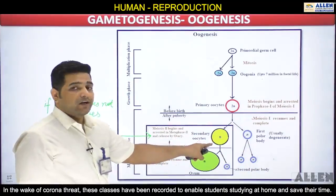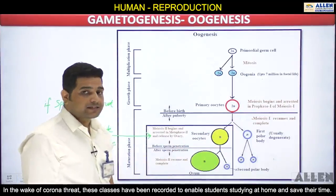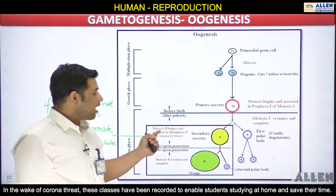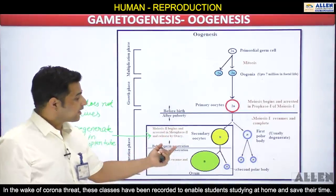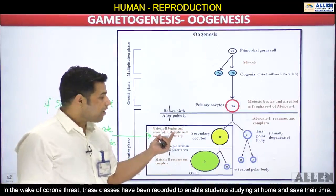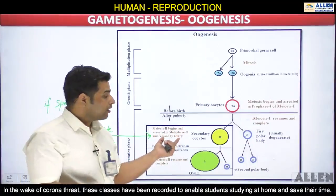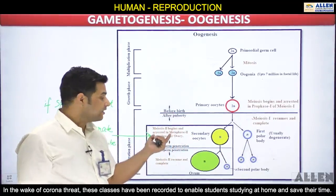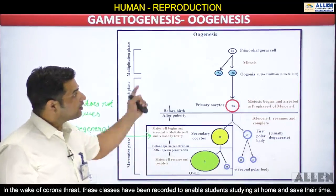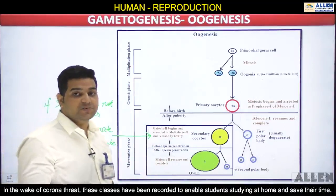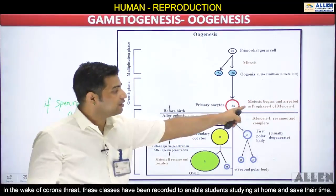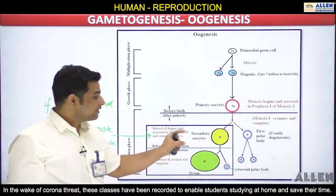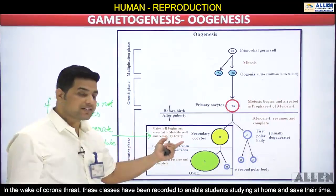The secondary oocyte, after completion of meiosis I, starts meiosis II but is arrested again at metaphase II of meiosis II. So in the oogenesis process, arrest takes place two times: first before birth in prophase I of meiosis I, and second at the time of puberty when the secondary oocyte is arrested at metaphase II of meiosis II.